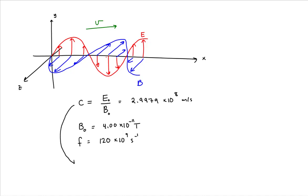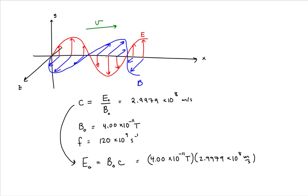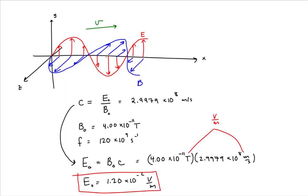The amplitude of the electric field is easy — it is just the product of the amplitude of the magnetic field and the speed of light. The amplitude of the magnetic field is 4.00 times 10 to the minus 11 Tesla, and the speed of light is 2.9979 times 10 to the eighth meters per second. Plugging this into the calculator, I get 1.20 times 10 to the minus 2 volts per meter, where a Tesla meter per second is equivalent to a volt per meter. So here is the amplitude of our electric field.